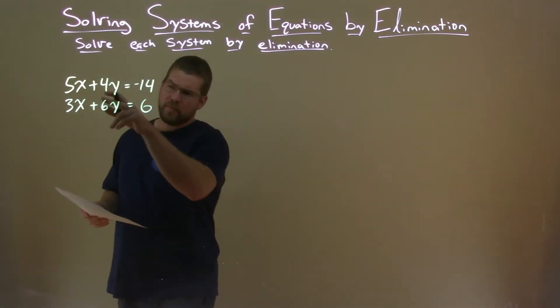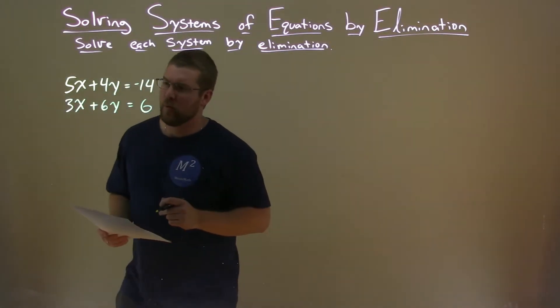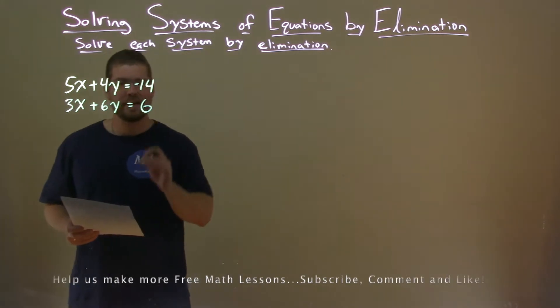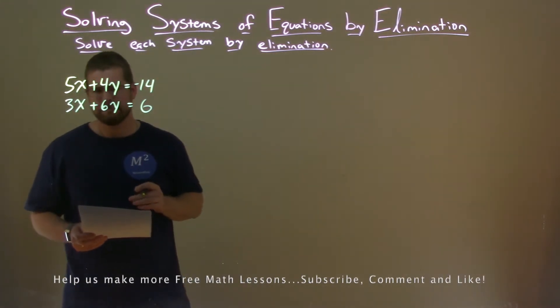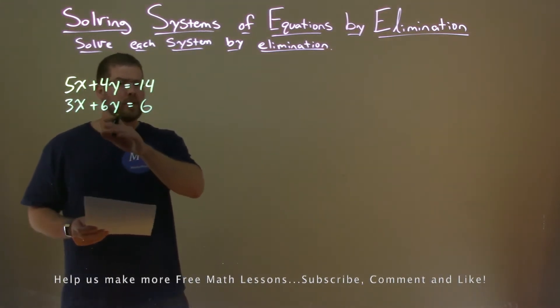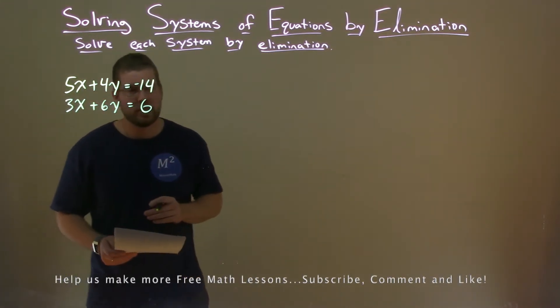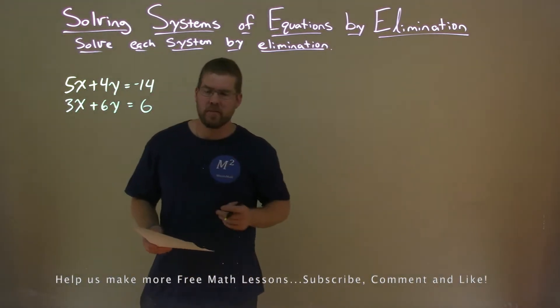We're given this problem. 5x plus 4y equals negative 14. 3x plus 6y equals 6, and we're solving by elimination.